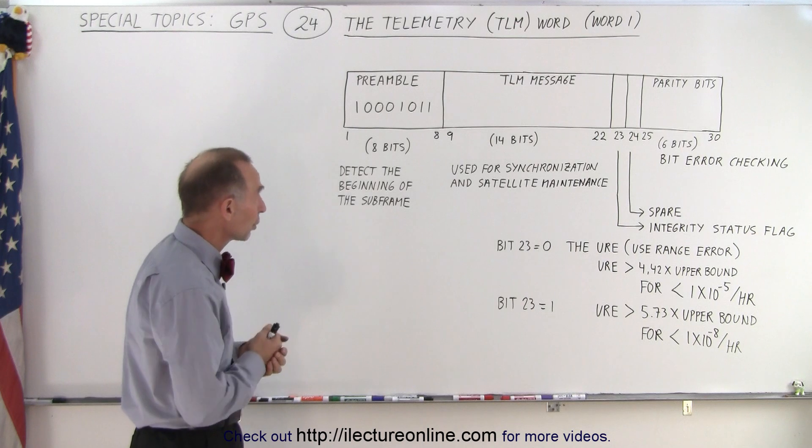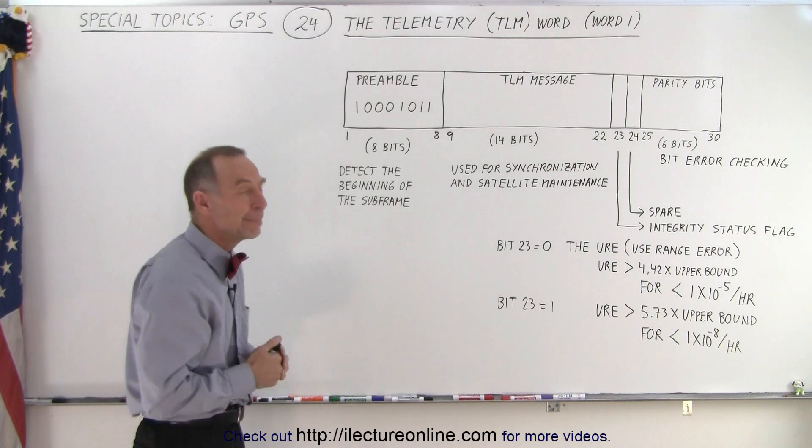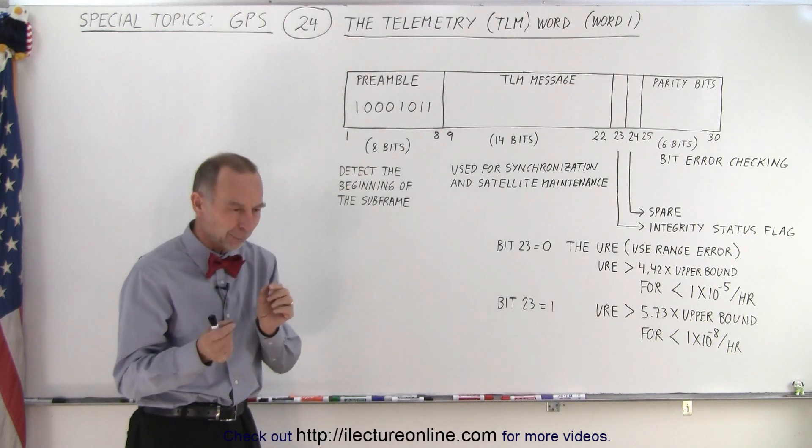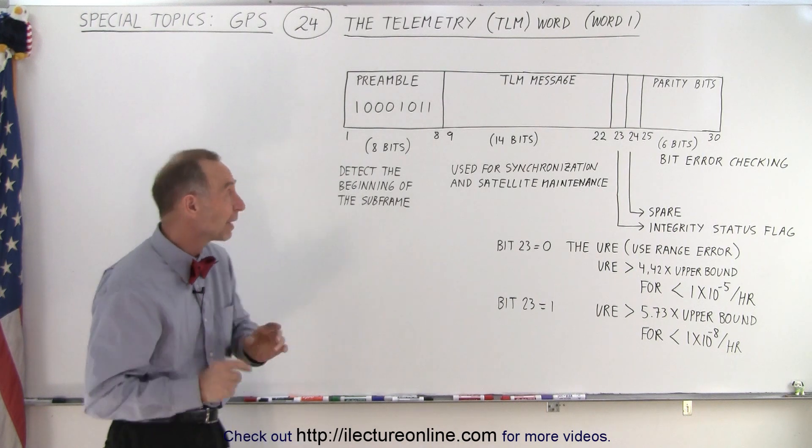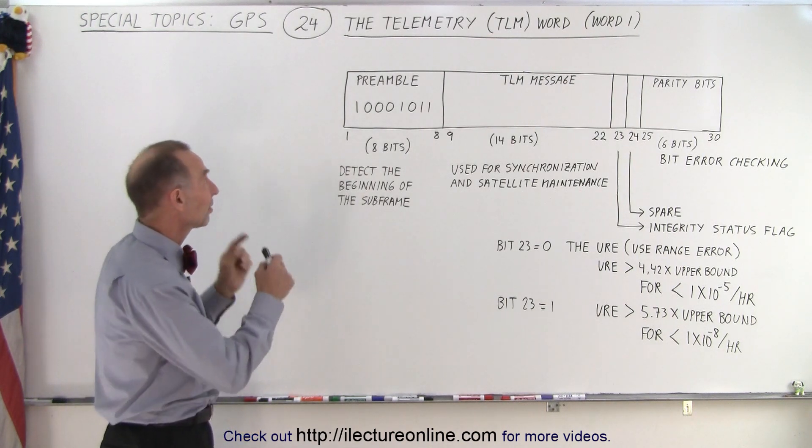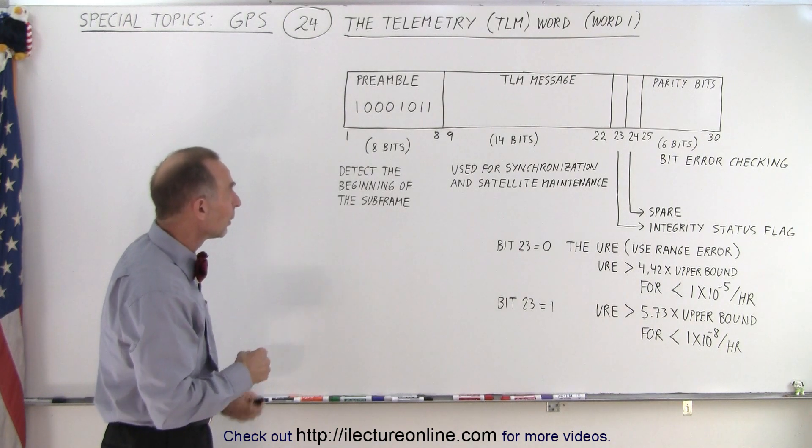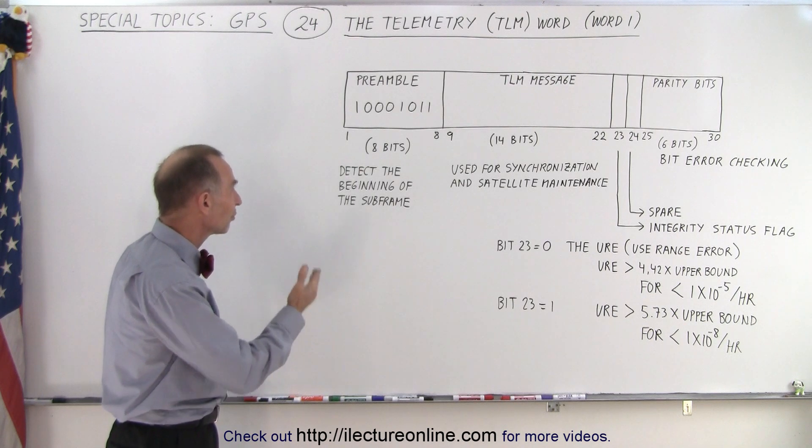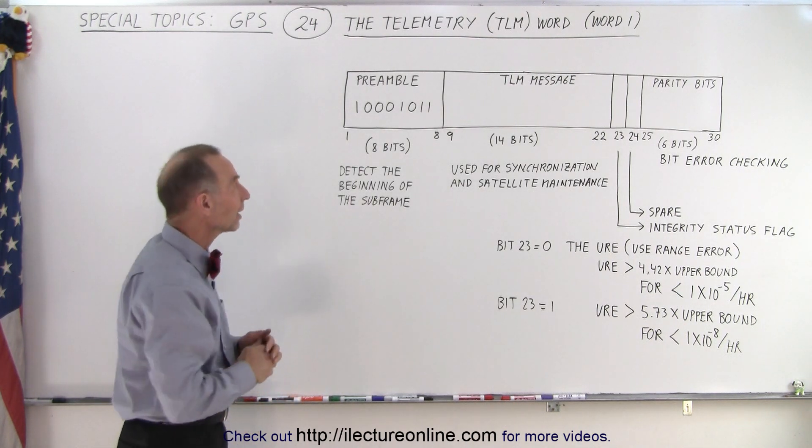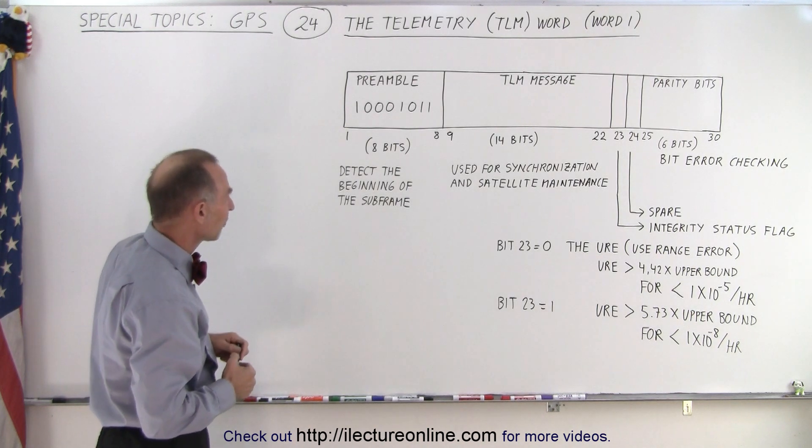It's called the telemetry word, and just like every other word, it has 30 bits. Now the first eight bits - and in a previous video I couldn't remember if it was six or eight, but it's eight bits - we have what we call eight preamble bits. That is the first eight bits for every TLM word, for every word one, which enables the receiver to key in saying that's the beginning of my transmission of that particular subframe.